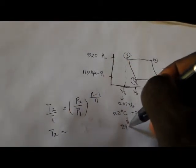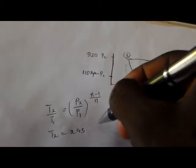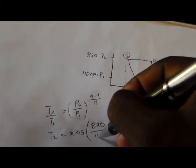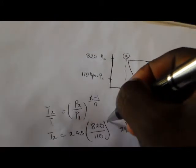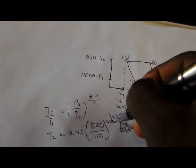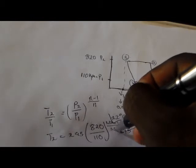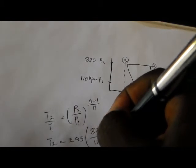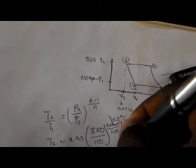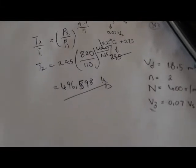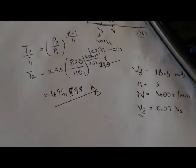So it's going to be 295. Therefore, we're going to multiply by 295 to the power. Temperature number two is 820 divided by 1110, which is pressure two over pressure one, to the power 1.35 minus one divided by 1.35. And then it's 496.598. So this is our delivery temperature — our delivery temperature is equal to 496.598 Kelvins.